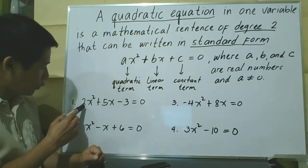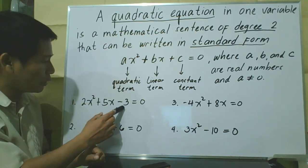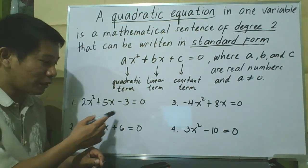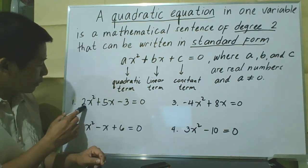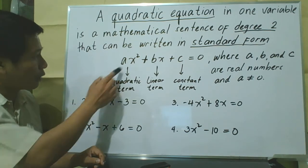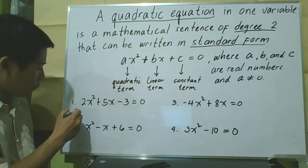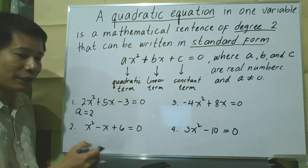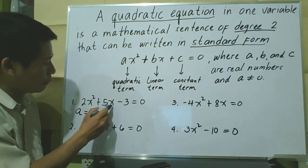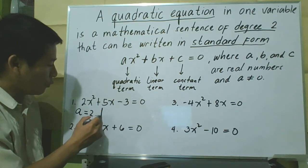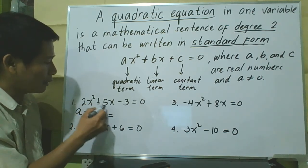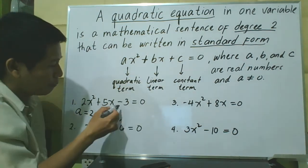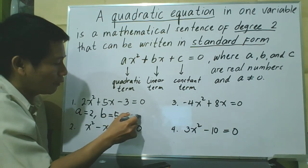Let's take number 1: 2x squared plus 5x minus 3 equals 0. Can you identify the quadratic term, the linear term, and the constant term? Our quadratic term is 2x squared, so the value of a is 2. Our linear term is positive 5x, so the value of b is positive 5. And the constant term c is negative 3.